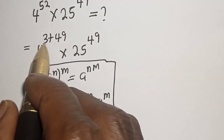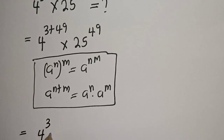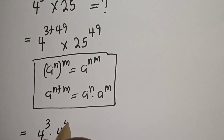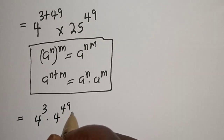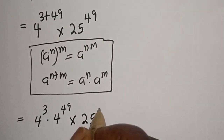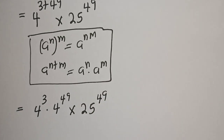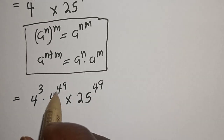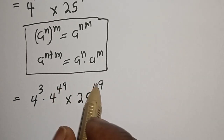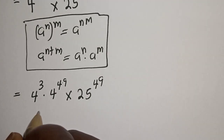Then 4 raised to power (3 plus 49) can be written as 4 raised to power 3 multiplied by 4 raised to power 49, multiplied by 25 raised to power 49. Now 4 raised to power 49 has the same power as 25 raised to power 49.